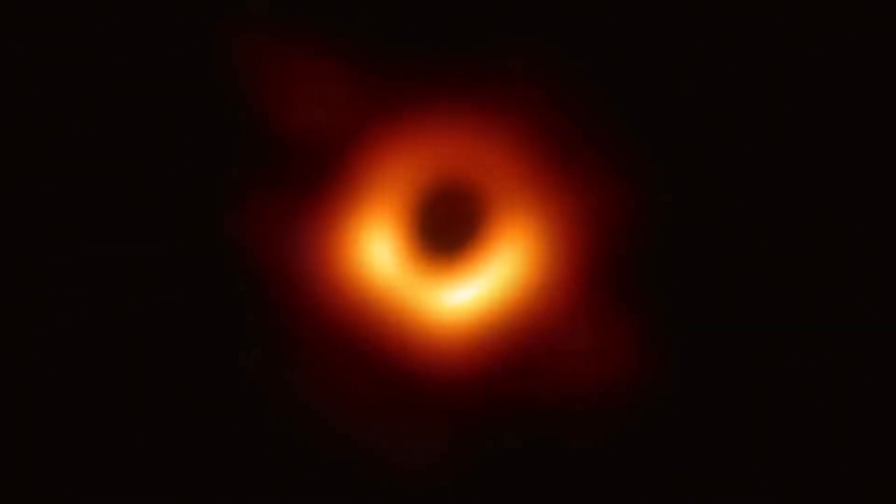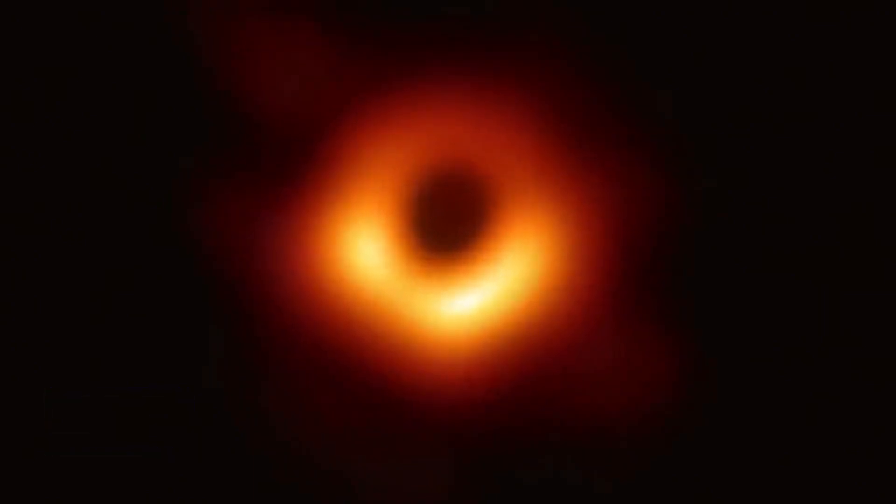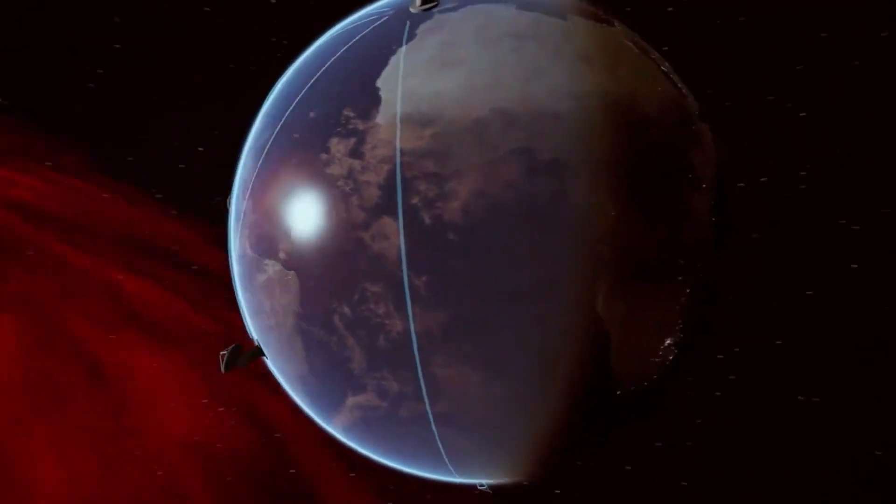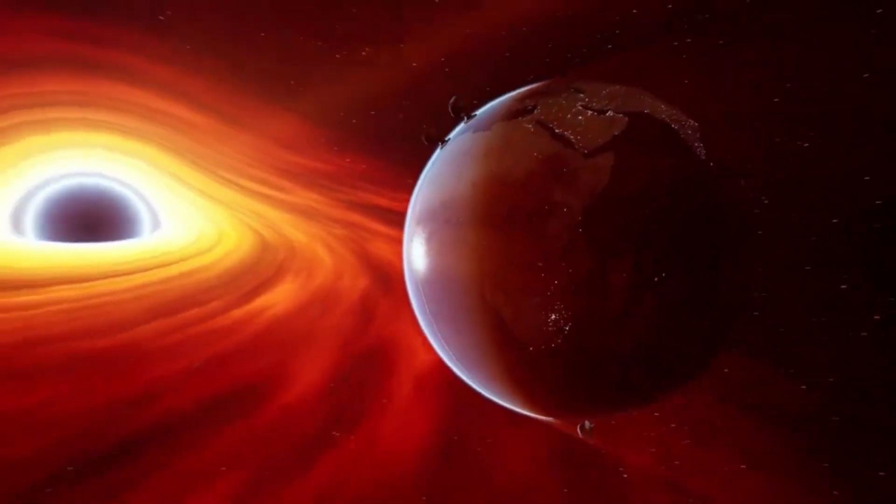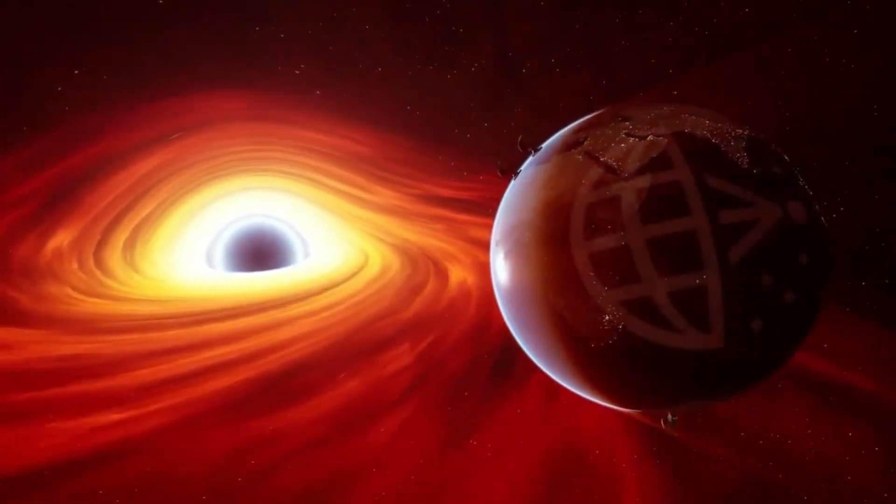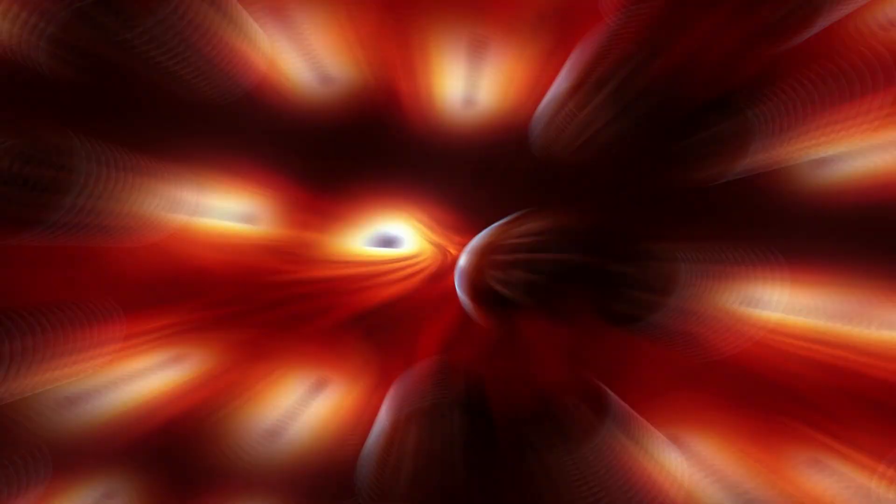A new picture was taken of M87, a supermassive black hole 55 million light-years away. Scientists used data from the Event Horizon Telescope, a world network of detectors, to make the picture.